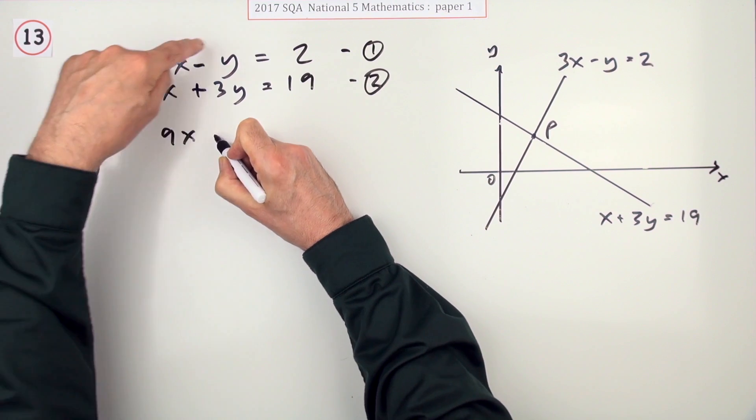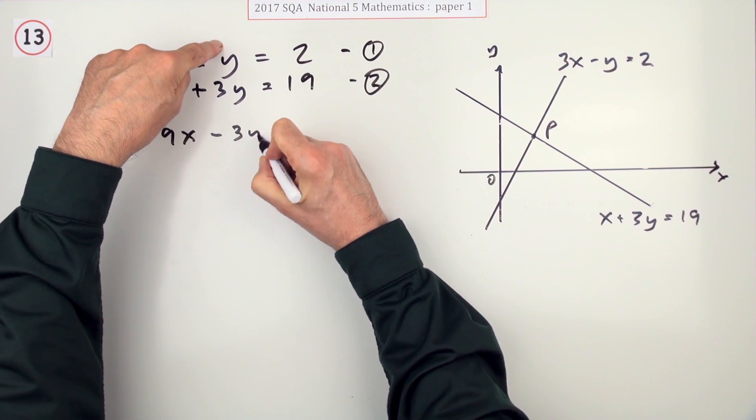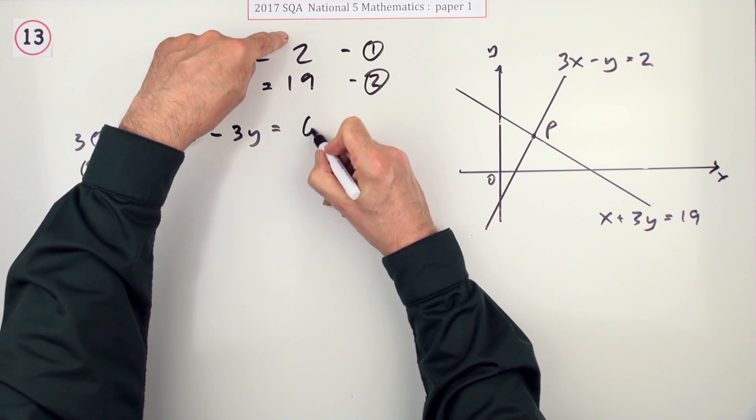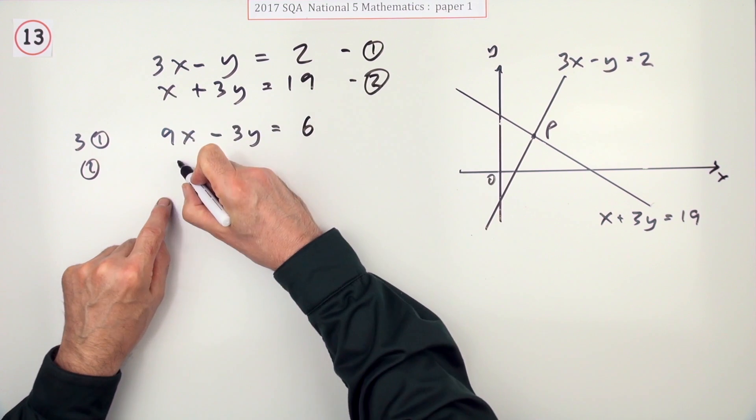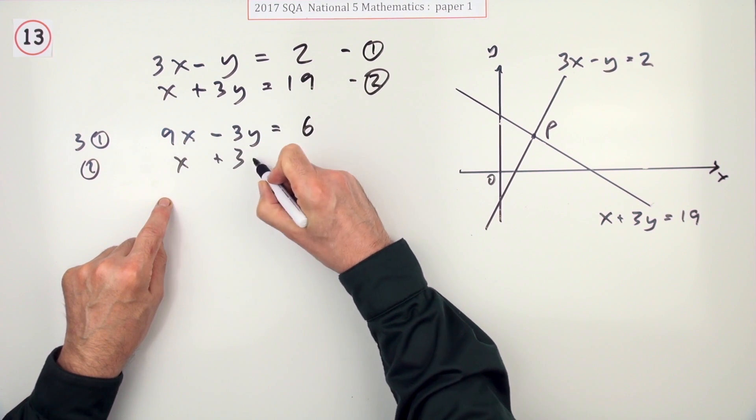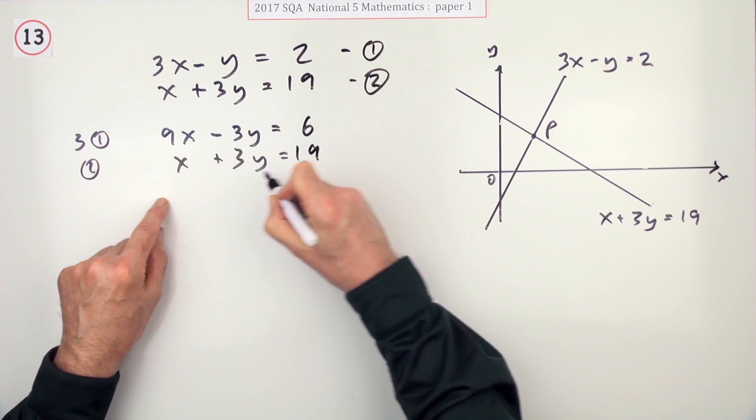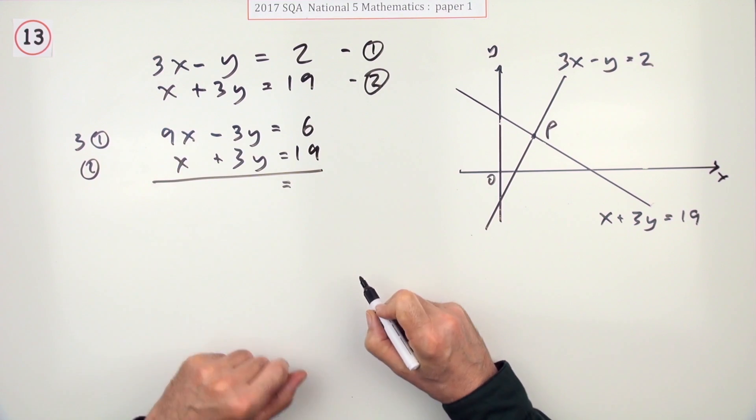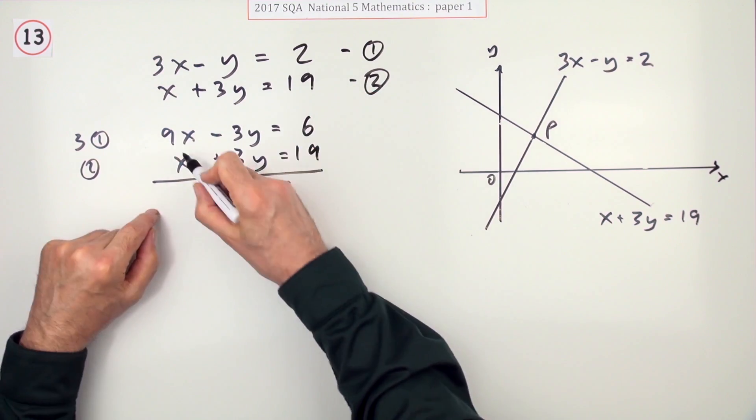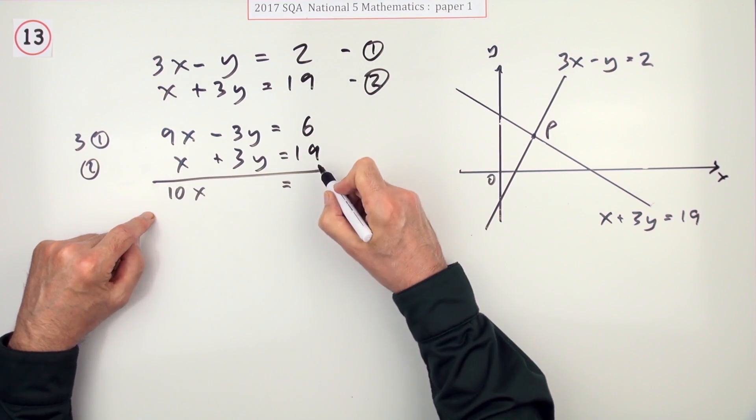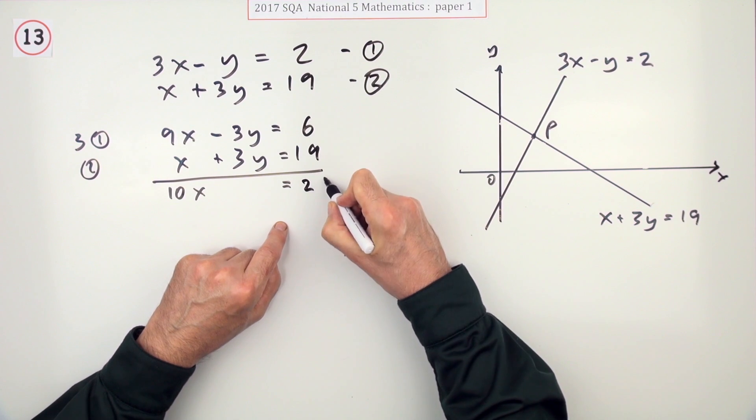So 3 times 3x is 9x. 3 times y is 3y. 3 times 2 is 6. I'll leave this one alone. x plus 3y equals 19. Now it all matches up nicely. They disappear and I'm left with 10x and that comes to 25.